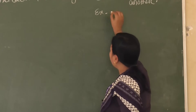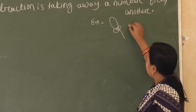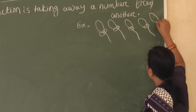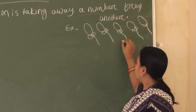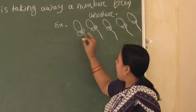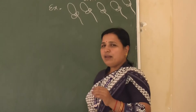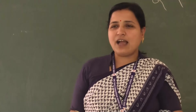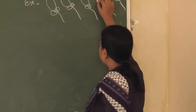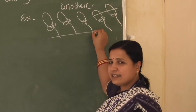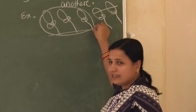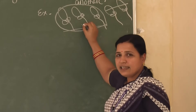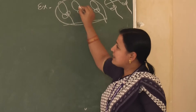Another example I will show to you. How many balloons are there? 1, 2, 3, 4, 5 balloons. Sitta has 5 balloons. She will give 2 balloons to her younger sister. After that, how many balloons are with Sitta? 3. The remaining balloons are 3. Total balloons were 5; after giving her sister 2, she has 3 balloons remaining. This is called subtraction.